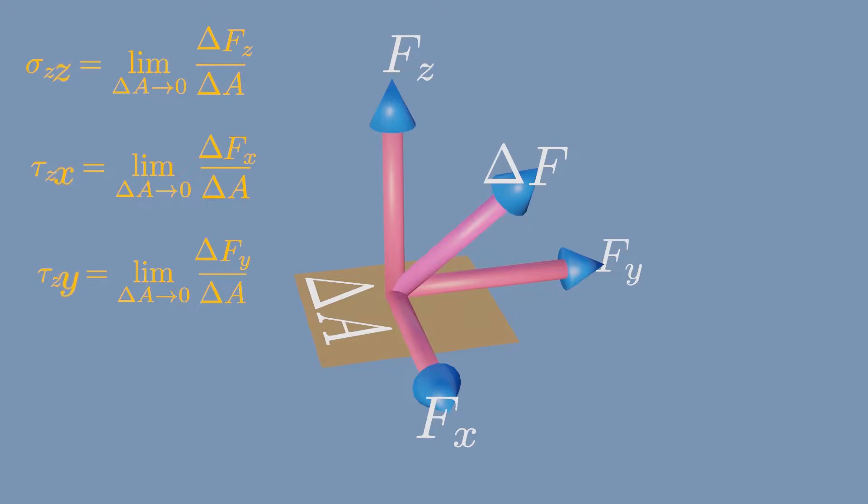And the second letter represents the direction of the stress. Normal stress acts on Z axis, tau Zx acts on X axis, and tau Zy acts on Y axis.